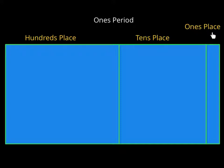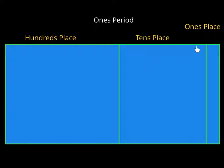You can see the ones place — it's pretty narrow, because I'm only going to have up to nine ones cubes in here at any one time, because once I get 10, I make a tens block. The tens place is a little bigger, because I can have up to 9 of those long rods in here. Once I get 10, I make a hundreds. And I can stack hundreds on top of each other to show you what they would look like.